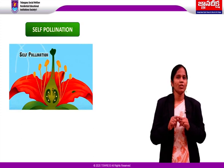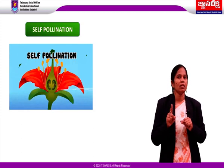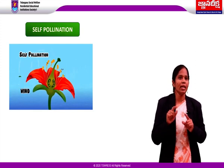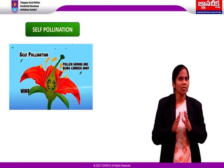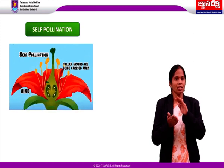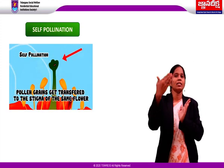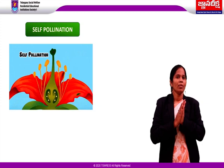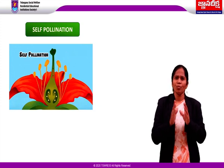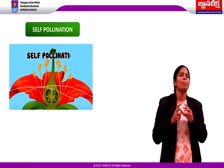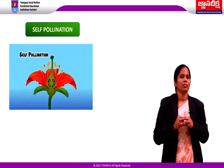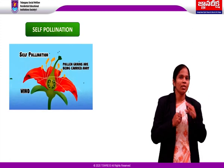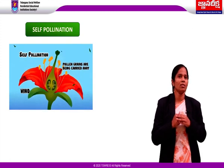In self-pollination, there is no diversity in the genes, and therefore the purity of the race is maintained — meaning the same characters are transferred to the next generation. Self-pollination most probably occurs in bisexual flowers, like brinjal and tomato.